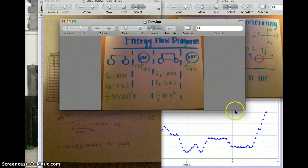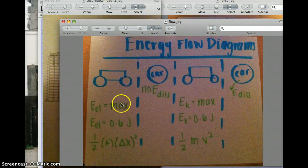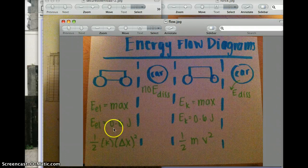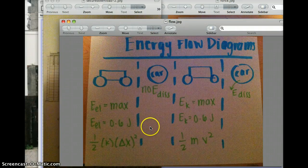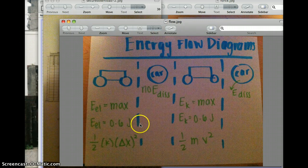In the first column we have the car before it starts moving, so it's stationary and the spring is loaded but hasn't been released yet. Therefore the elastic energy is 0.6 joules and there's no energy dissipated.